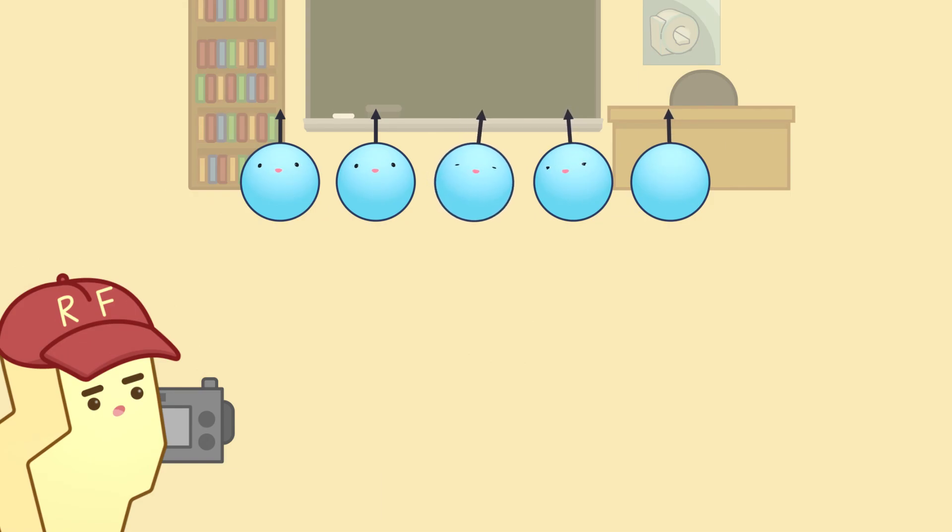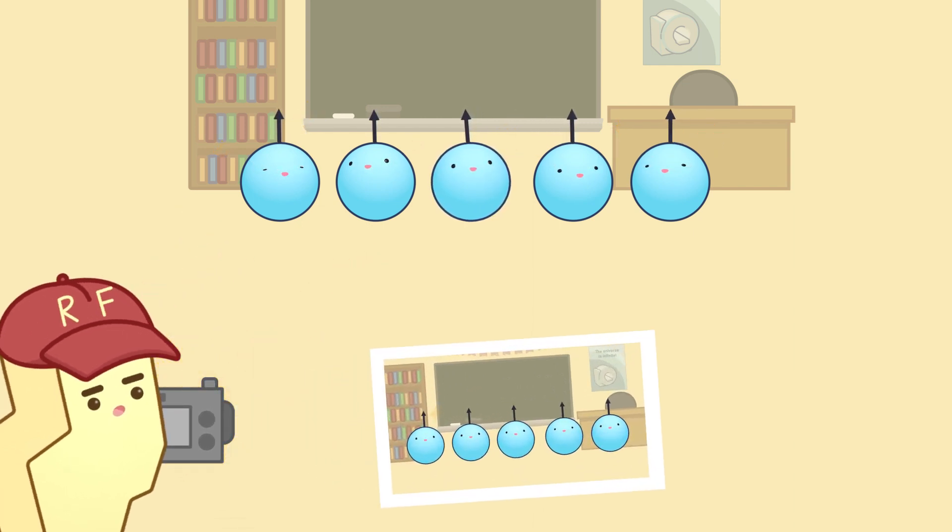We can liken the 180-degree refocusing pulse and the synchronous precession it creates to an elementary school class photo shoot. The teacher may need to raise her voice in order to get the class to focus its attention on the photographer and achieve a yearbook-worthy shot, the echo.